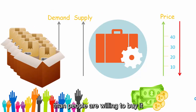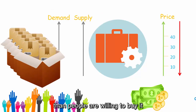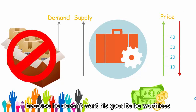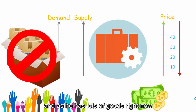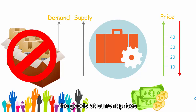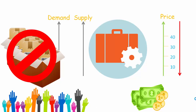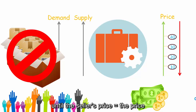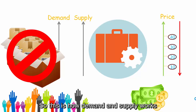Similarly, when supply rises and there are more goods and services than people are willing to buy, the seller lowers the price in order to sell his goods and increase demand — because he doesn't want his goods to become worthless. He lowers the price to the point where the seller's price equals the price buyers are willing to pay. This is how demand and supply works.